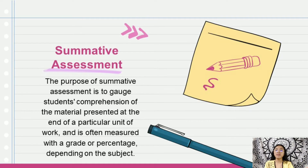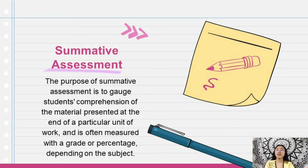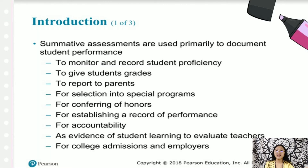So the purpose of Summative Assessment is to gauge students' comprehension of the material presented at the end of a particular unit of work, and is often measured with a grade or percentage depending on the subject. There are many purposes of Summative Assessments in instruction, but the main goal of any assessment is to provide clear communication between the student and the teacher. Summative Assessments are used primarily to document student performance, to monitor and record student proficiency, to give students grades, to report to parents, for selection into special programs, for conferring of honors, for establishing a record of performance, and for accountability.